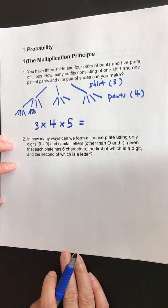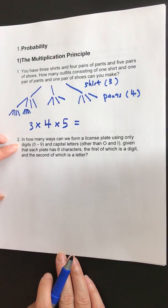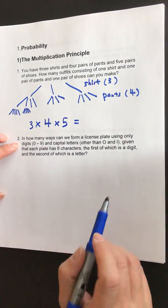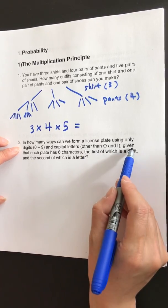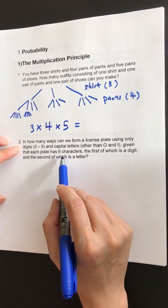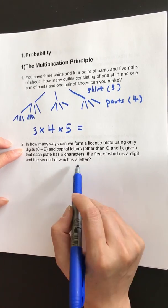Second example. In how many ways can we form a license plate using only digits zero to nine and capital letters other than O and I? Given that each plate has six characters, the first of which is a digit, and the second of which is a letter.